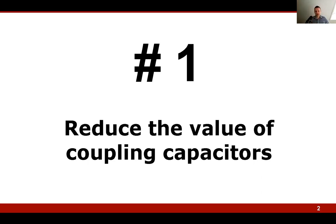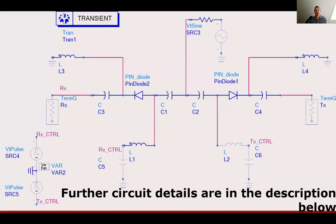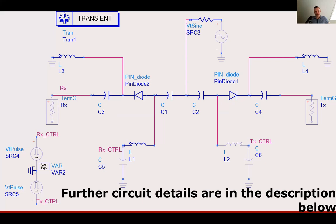To reduce this time, you need to reduce the capacitance. I refer to capacitors C1, C2, C3, and C4 in this simple SPDT switch. The purpose of the capacitors is to prevent DC signal flowing into the load, so they should be large enough to be transparent for the RF signal. However, this is not good for the dead time.